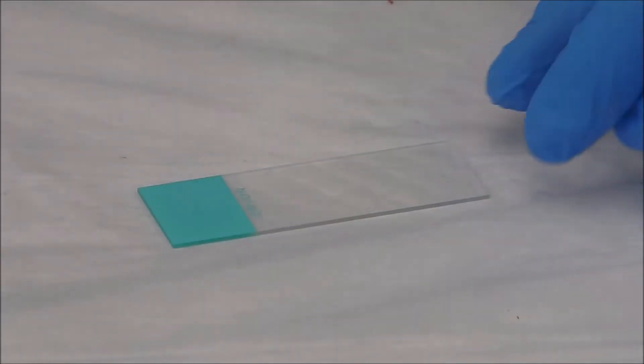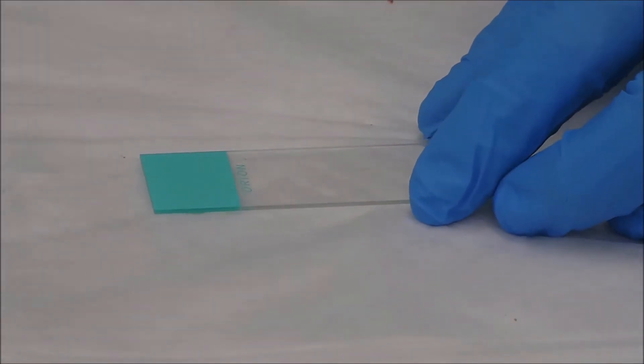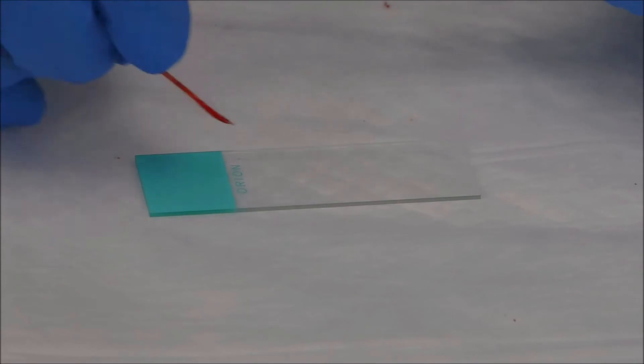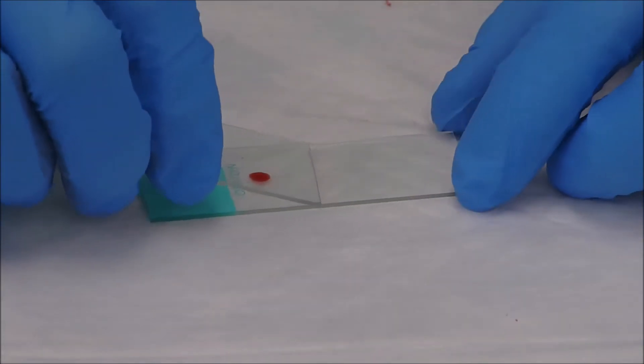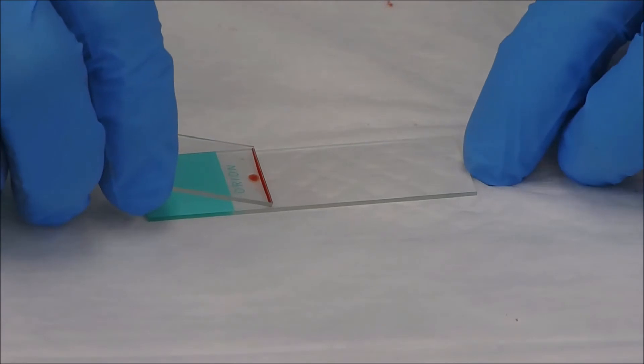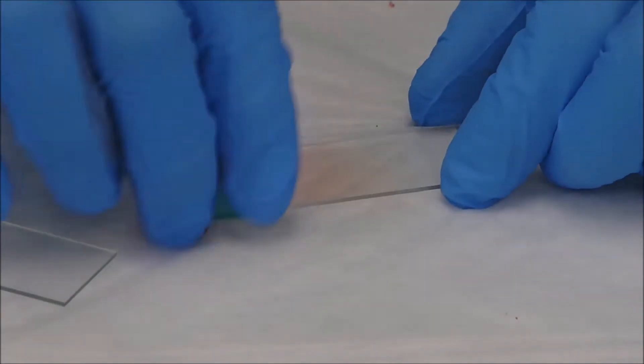Again, I get two slides out. I get my specimen slide, and then I get a spreader slide. And they need to be clean slides. Don't try to reuse your slides. I'm going to add another drop to my slide. And then I'm going to use my spreader slide to pull back about a 45 degree angle, and then push forward just like that.